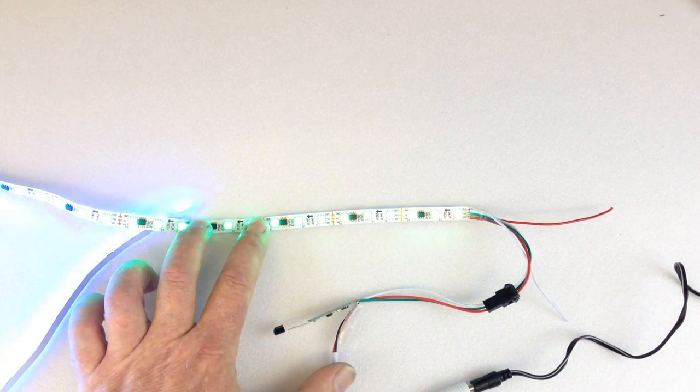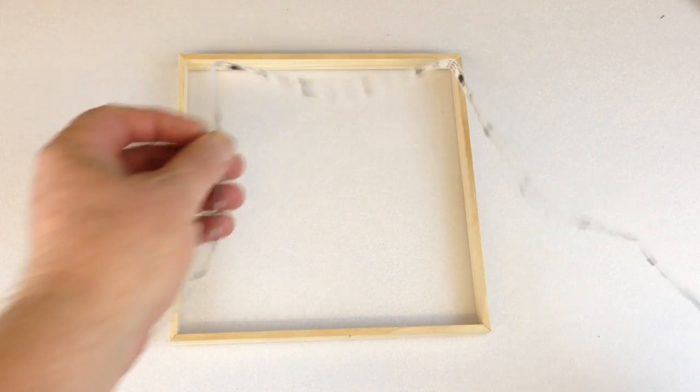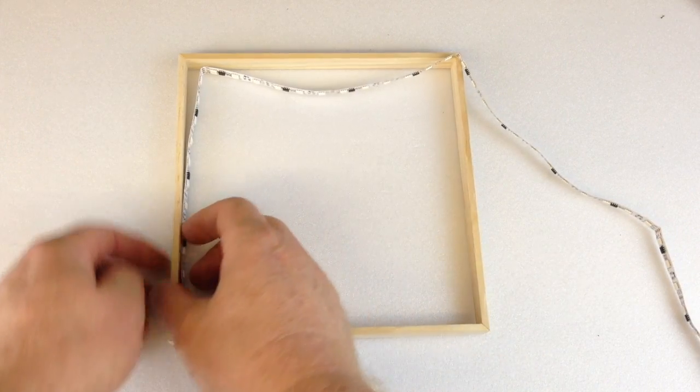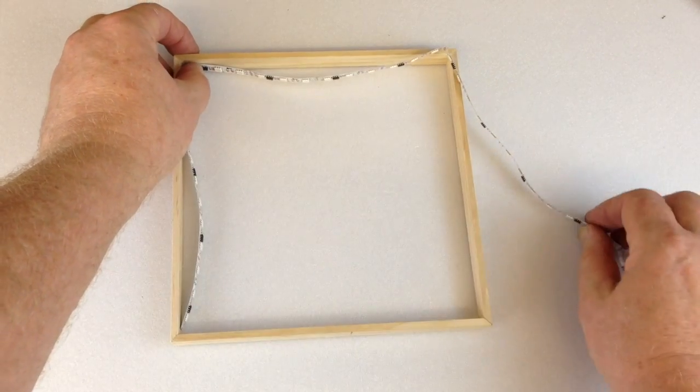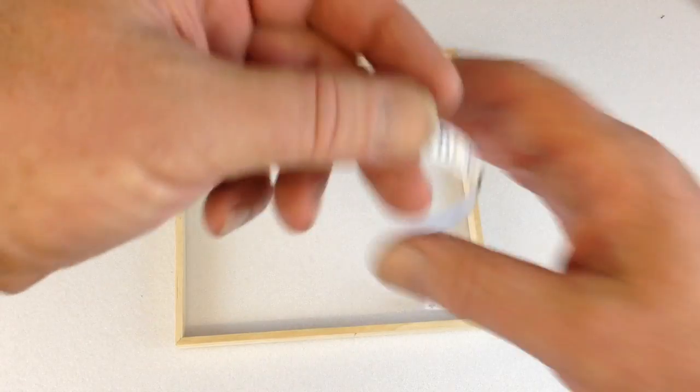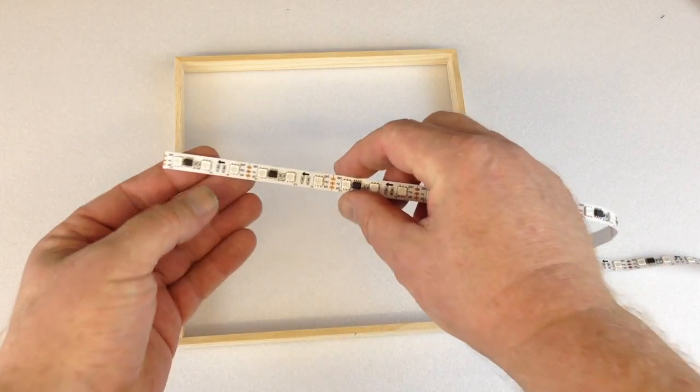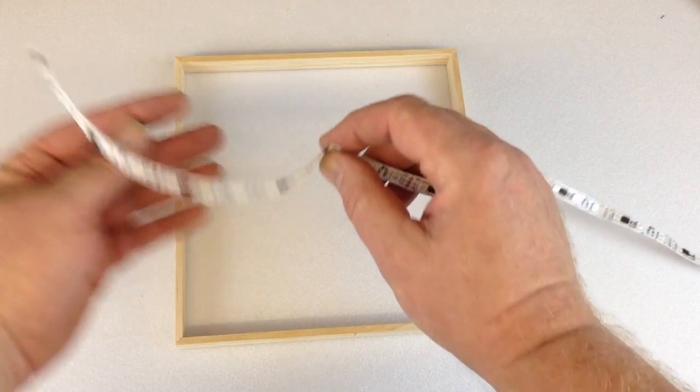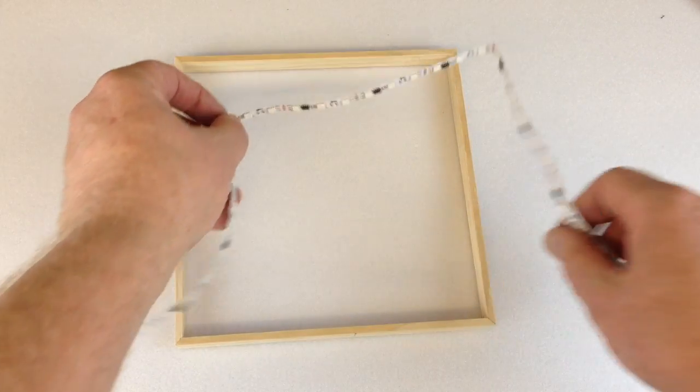A spacer and LEDs. The 12 volt LEDs happen to fit perfectly into this spacer. Measure four groups - one, two, three, four. Fold it, and then four again, four again.